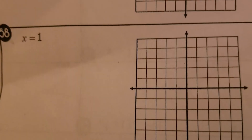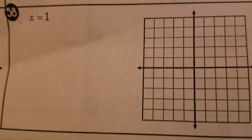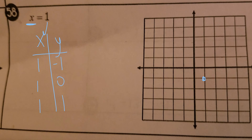58 is very similar — make an xy chart to start. Now because this says x equals, that means I have to put 1 in for x; I don't have a choice. But the good news is I get to pick whatever I want for y. So x equals 1: I go 1, negative 1 — put a dot — 1, 0 — put a dot — 1, 1 — put a dot. It shows me that it's an up and down line. This is a slope that is undefined; there's no run.